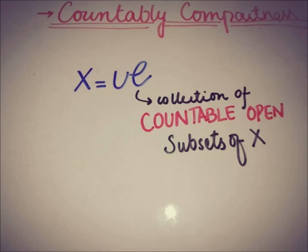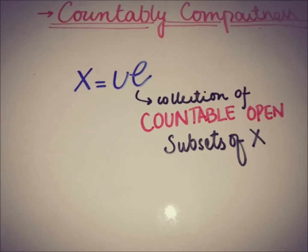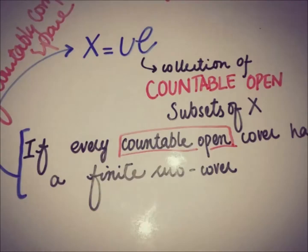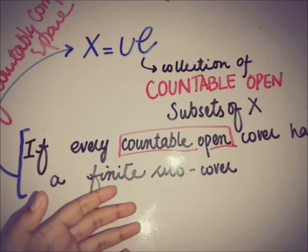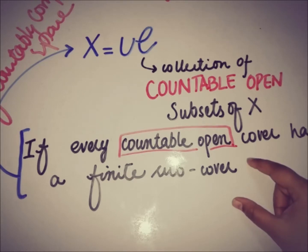A topological space X is said to be a countably compact space if every countable open cover of X has a finite subcover. So if every countable open cover in a space X has a finite subcover, then the space is said to be countably compact.